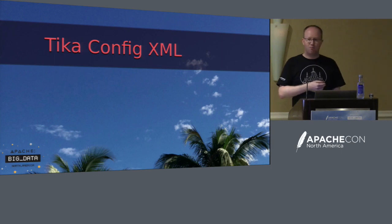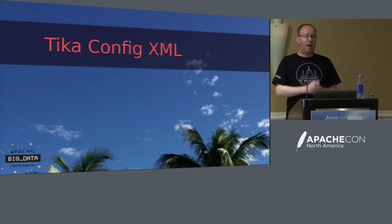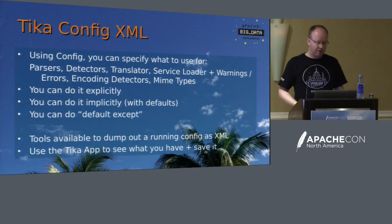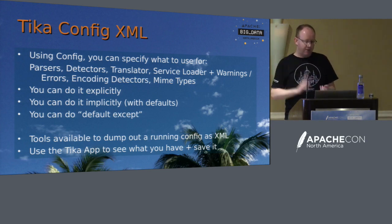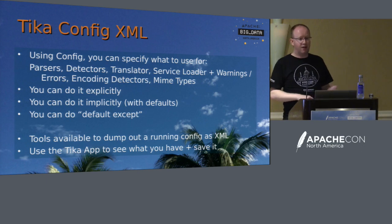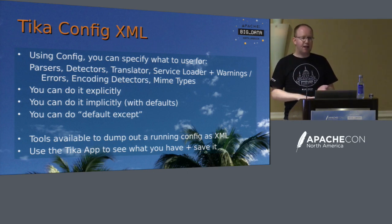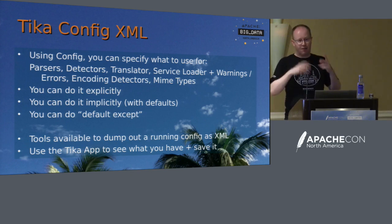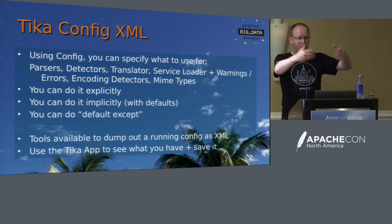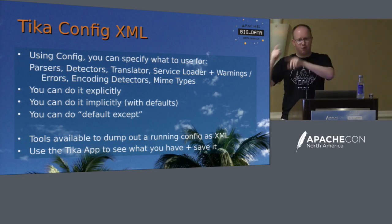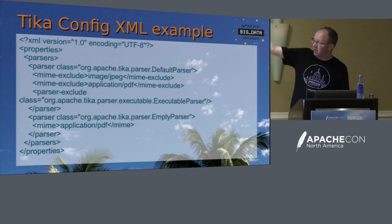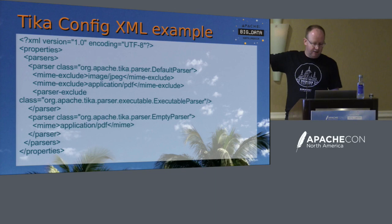TikaConfig XML is relatively new in the current way of working, but it just lets you say: I want to turn off these parsers, I want to turn on this language translation, I want to tweak the priority of these things. You can say what parsers and detectors to use or not use, manually wire in extra MIME types to parsers, do it explicitly or implicitly. So you say: I want default TikaConfig except I want to turn off OCR — and that's easy. If you use the Tika app, it can tell you what your config currently is and translate between modes.